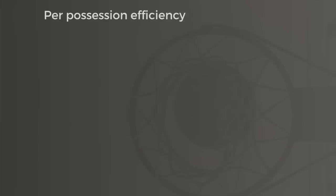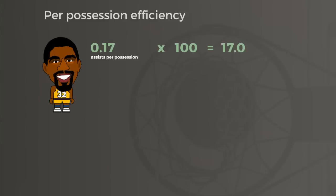Instead, they smothered teams defensively, but the emphasis on their per-game numbers masks that defensive prowess. Sometimes using per-possession numbers is cumbersome — it's awkward to say Magic averaged 0.17 assists per possession. So instead, these are often expressed as per-100 possession values.